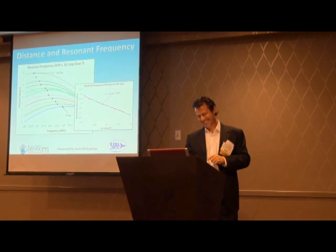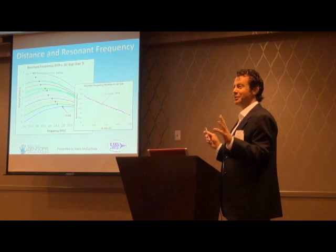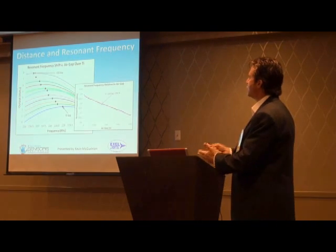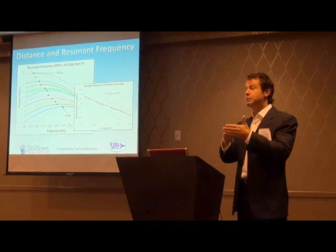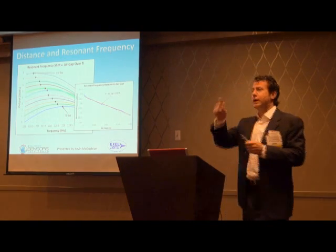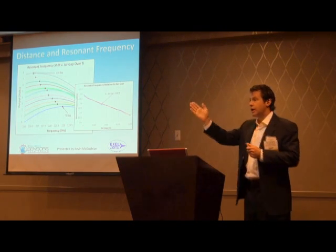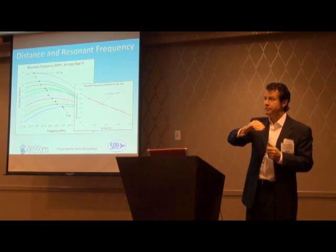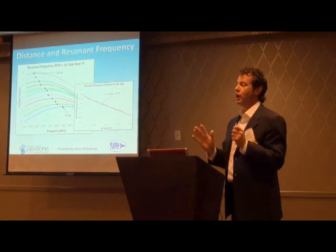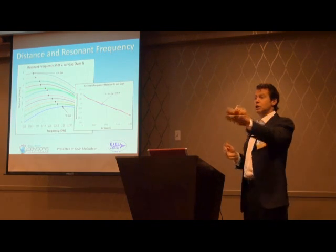Another curious thing that happens with the sensor: as we park it in front of a target — say a piece of titanium, or composite, or aluminum — and move the sensor away, that resonant frequency shifts to the left, to lower frequencies. You can directly relate that frequency shift to distance, which is important because quite often you'll be scanning something with variability in air gap — variability in the distance from the sensor face to the target.